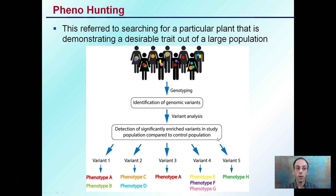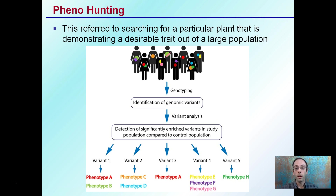So we get to this term phenohunting — it's short for phenotype hunting. This refers to searching for a particular plant that is demonstrating a desirable trait out of a large population. There's a large population with a high degree of genetic and physical variation, and we go through the process of selecting for certain phenotypes — certain characteristics we see in a particular plant — and want to breed that trait further and replicate it.